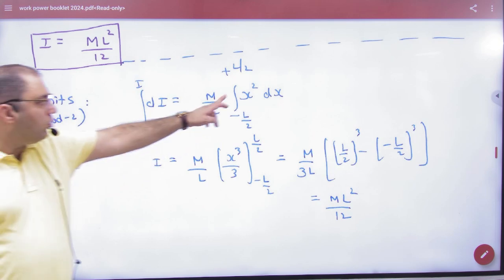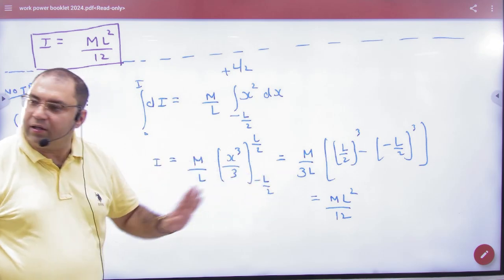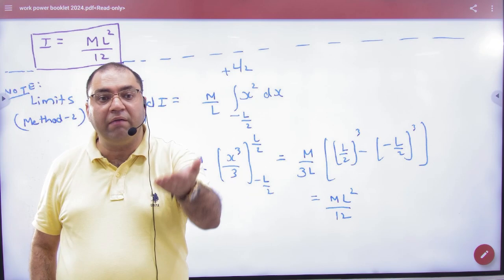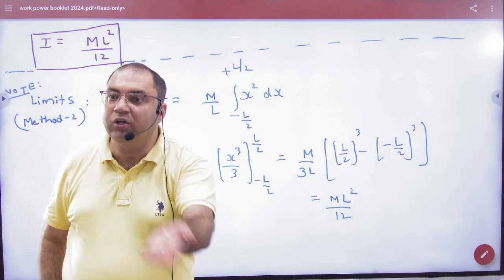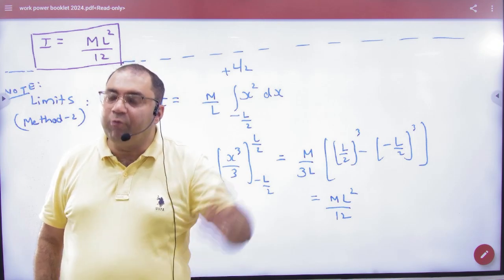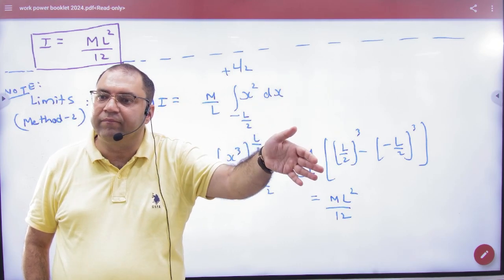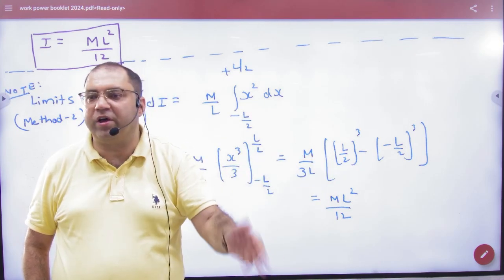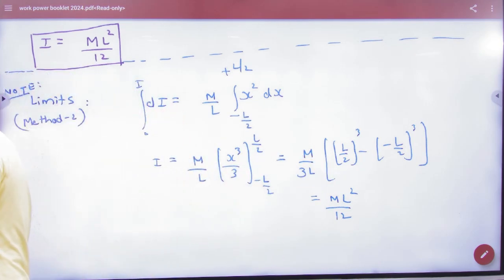I hope you know integration. X cube integration, put the limits, then after putting limits answer will be the same. Important is not this - important is the moment of inertia formula. What is it? ML square by 12. Point mass moment of inertia is what? MR square. Ring is what? MR square. Disk is what? Half MR square. Rod is what? ML square by 12. Is the point clear?